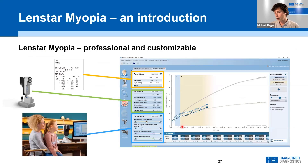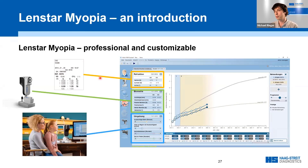To summarize where all data comes from: refraction data can be imported from a refractometer or entered manually. Biometry data comes from our LENSTAR. The answers to the questionnaire are worked out together with the parents during the myopia management session.